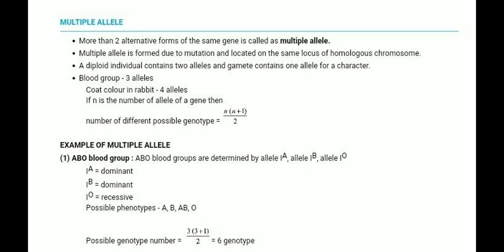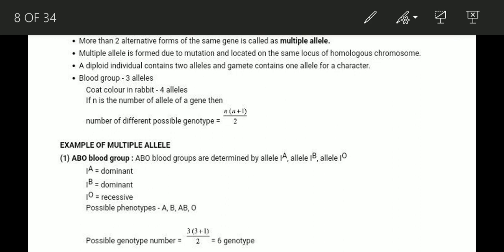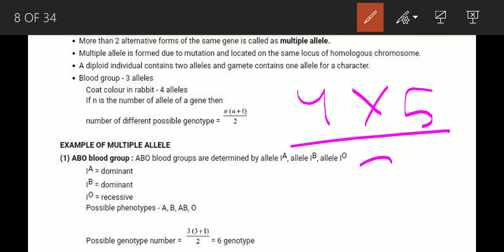For rabbit coat color with 4 alleles, we apply the formula: 4 times (4+1) = 4 times 5 = 20, divided by 2 equals 10. So there are 10 possible genotypes for rabbit coat color.